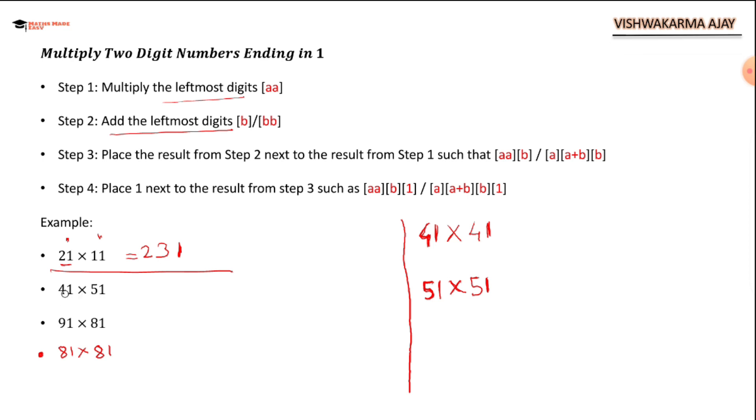41 times 51. 4 times 5 is 20. 4 plus 5 is 9. At the end I have to place one.